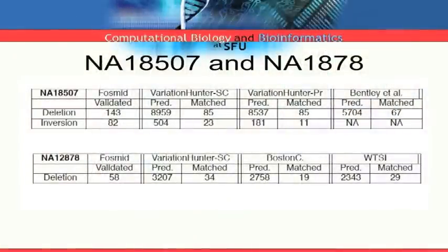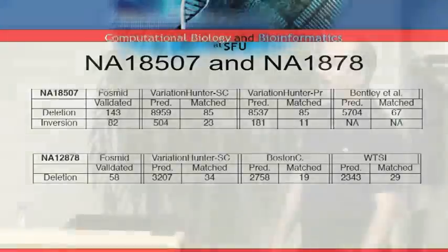There are two other groups, in fact, a few other groups that compete with us with respect to Structural Variation Detection. And the second table is for another individual. Again, for the deletions, out of 58 validated deletions, we were able to find 34 of them. The alternatives are not doing that well. Obviously, we predict more deletions than the alternatives.